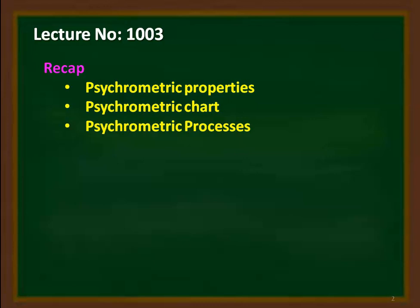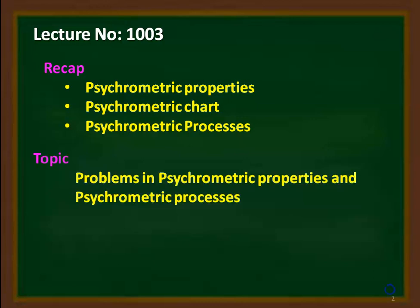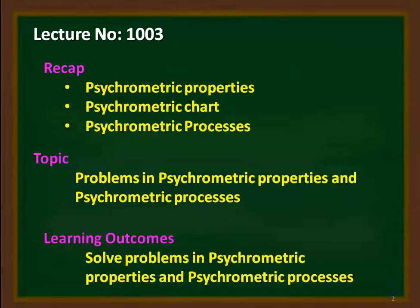The psychrometric processes covered include sensible heating, sensible cooling, cooling and dehumidification, heating and humidification, adiabatic mixing of streams, and evaporative cooling. In this lecture, we solve a few problems on psychrometric properties and processes. At the end of the lecture, the student will be able to solve problems in psychrometric properties and psychrometric processes.